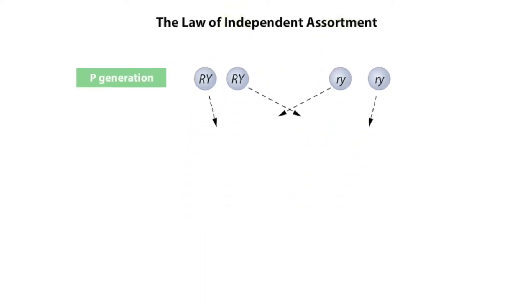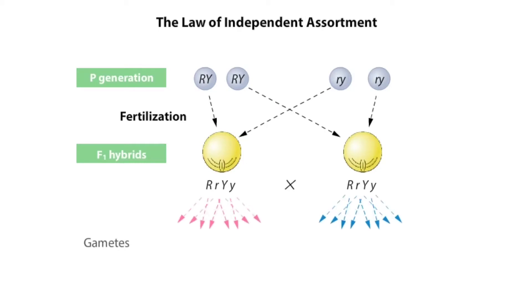The plants of the next generation are called F1 hybrids, and Mendel crossed large numbers of them. Again, if the alleles assort independently into gametes, all four different gamete possibilities would be produced in equal proportions.